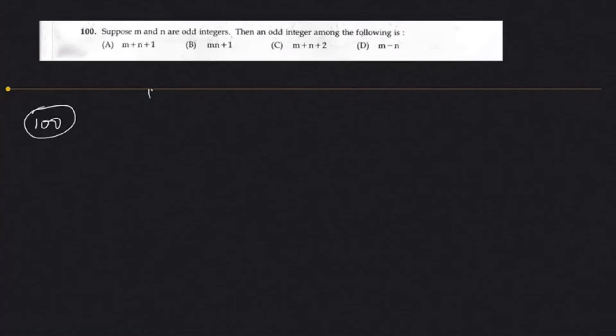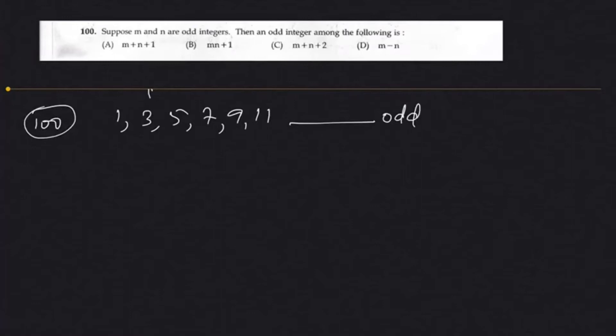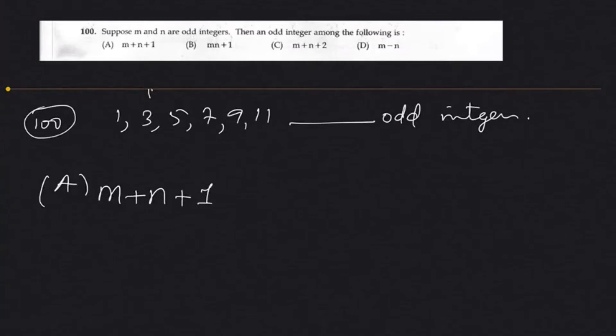Question 100 is an interesting one. Suppose you are not very good at quantitative abilities — this is actually a very easy question. Suppose m and n are odd integers. Odd numbers are like 1, 3, 5, 7, 9, 11. Then among the following, which is an odd integer? The options are m plus n, and others. Just assume the numbers are 1 and 3, for instance.